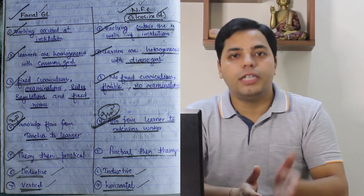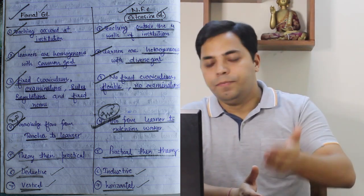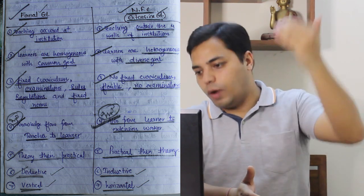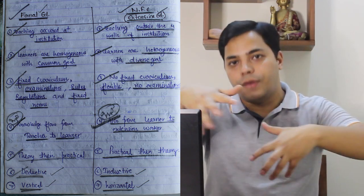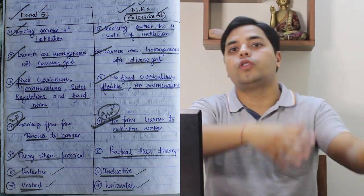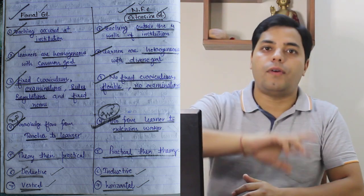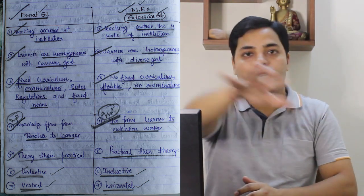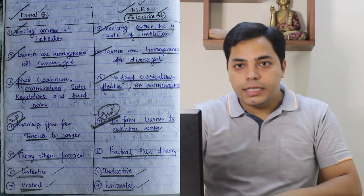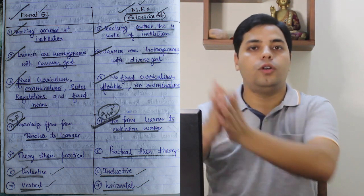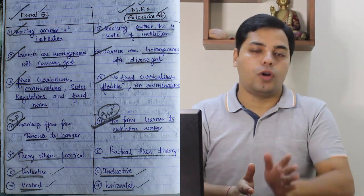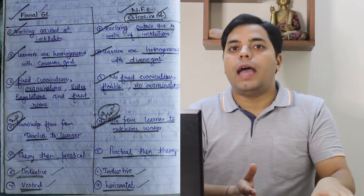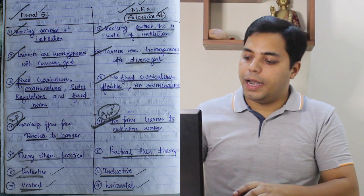Formal education is vertical — knowledge flows from teacher to student. Non-formal education is horizontal — interaction happens at different levels; farmers also share knowledge with other farmers, so farmer-to-farmer extension creates a network. These are the important differences between formal and non-formal education. You can also find this in the GL Ray book.